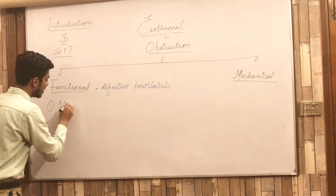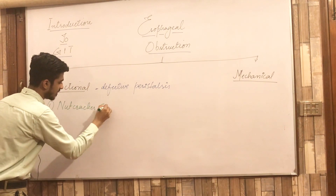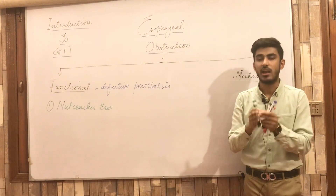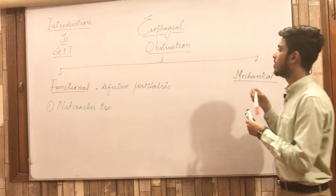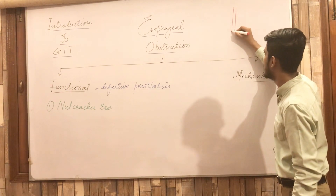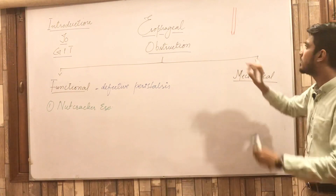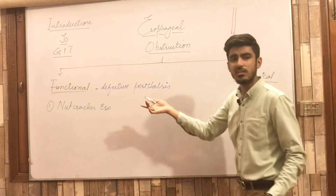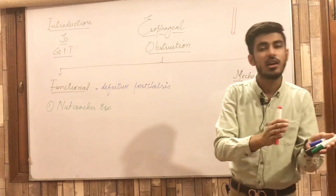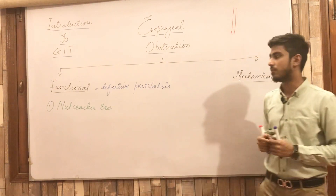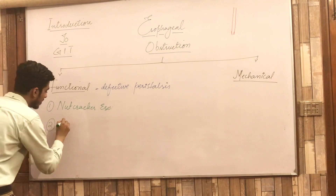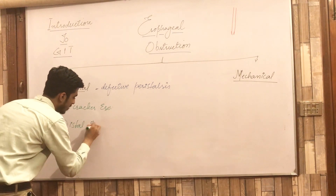The first principal form is the nutcracker esophagus. In this condition, the distal part of the esophagus is continuously contracted. The esophagus has a proximal part, a middle part, and a distal part — and in nutcracker esophagus there is contraction of the distal part. This occurs because of uncoordination between the inner circular and the outer longitudinal muscles of the esophagus.